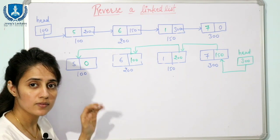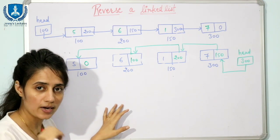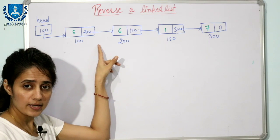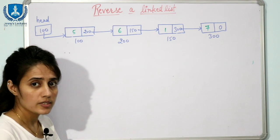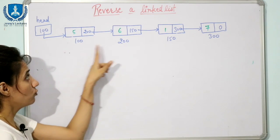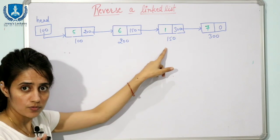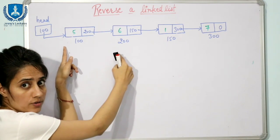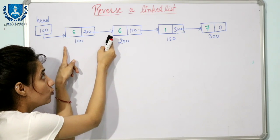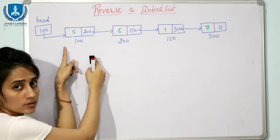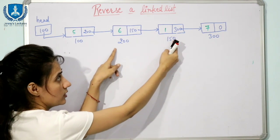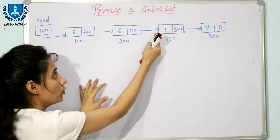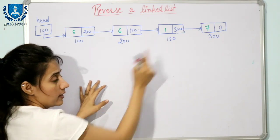Now let's see how to implement this in a C program. First we will discuss the method, apply it here, and then write the code. To reverse the linked list, you have to traverse it, and while traversing, at that same time we are going to reverse the links.